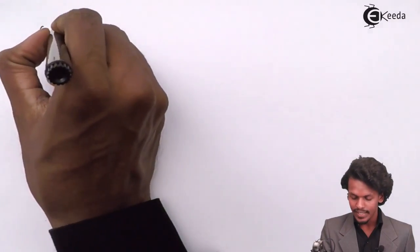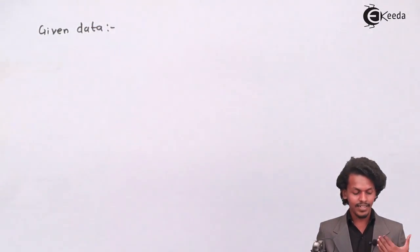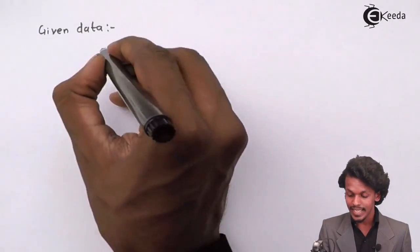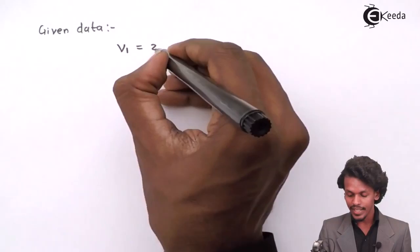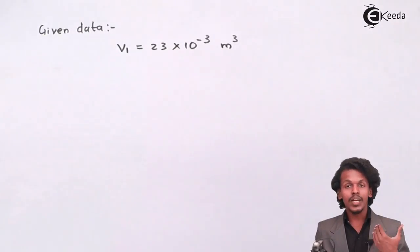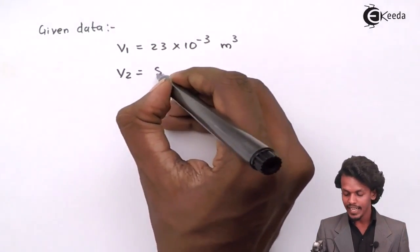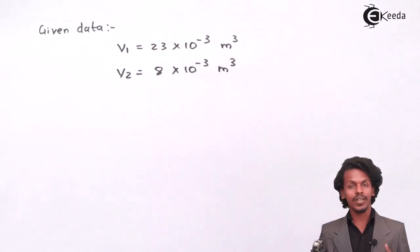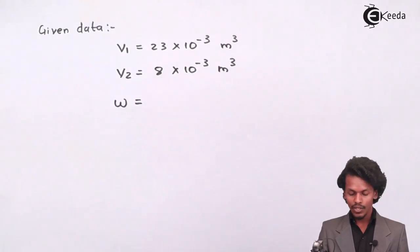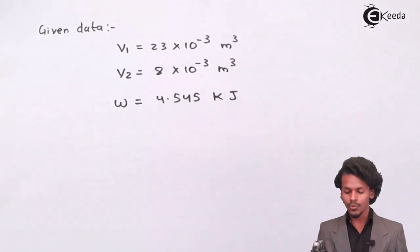The given data: we need to find the external pressure. The gas is compressed from an initial volume V1 = 23 x 10⁻³ m³ to a final volume V2 = 8 x 10⁻³ m³. The work done is W = 4.545 kilojoules.